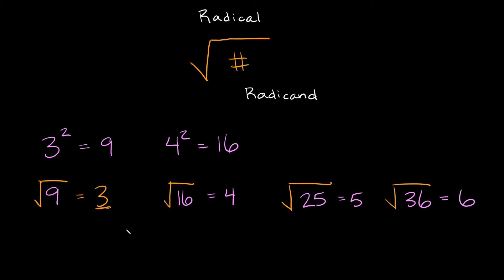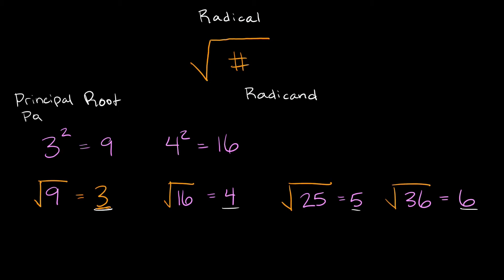Now one thing I want to point out is that as you can see, all of our answers were positive — we had positive 3, positive 4, positive 5, positive 6. So whenever you take the square root of a number, your answer is always going to be positive. The reason for that is because when you take the square root of a number, what we're really looking for is the principal root — in other words, we're looking for the positive root.